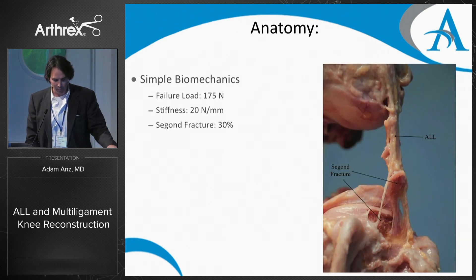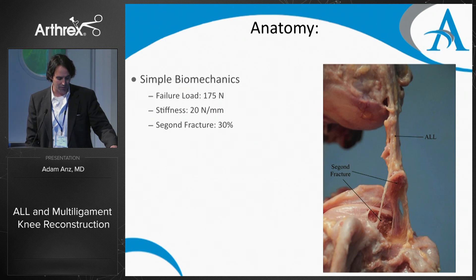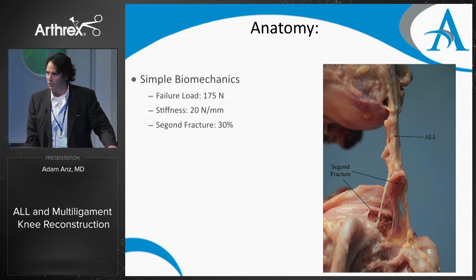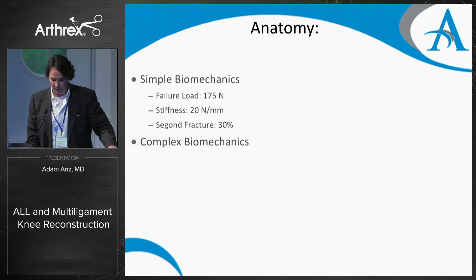In terms of simple biomechanics: the failure load when pulled to failure is 175 newtons on average. Its stiffness is 20 newtons per millimeter, and a Segond fracture occurred in 30% of specimens.